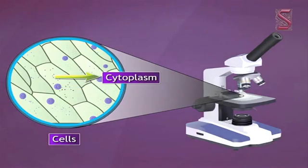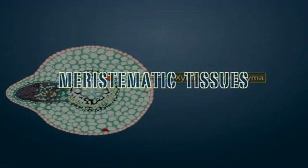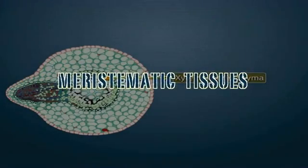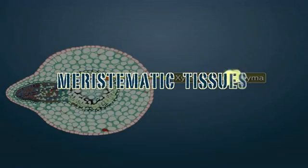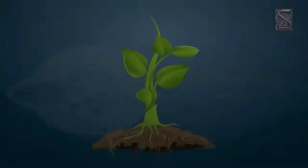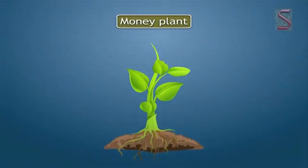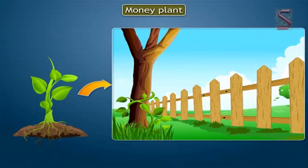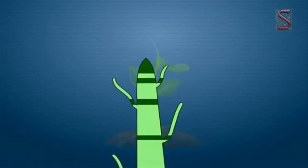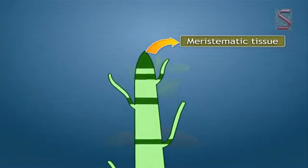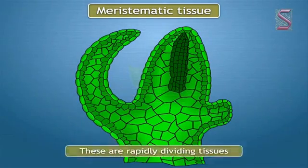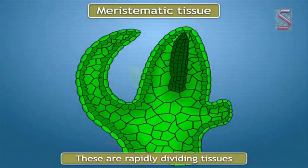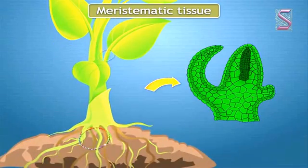Look at this beautiful money plant — it is growing month by month at a fast speed. Plants generally grow where meristematic tissue is present. These are rapidly dividing tissues, generally present at the tips of the stem and the roots.